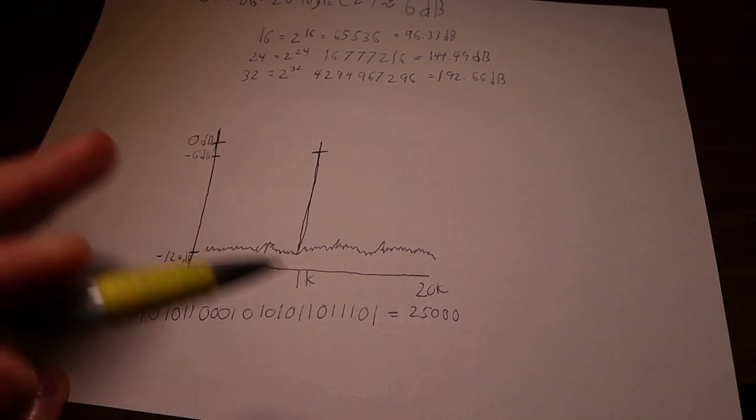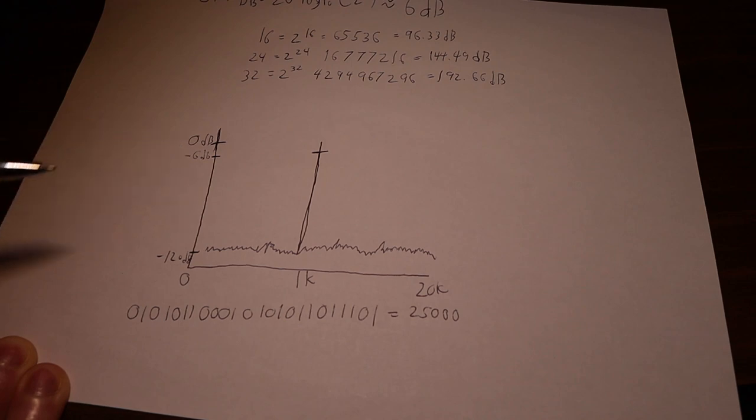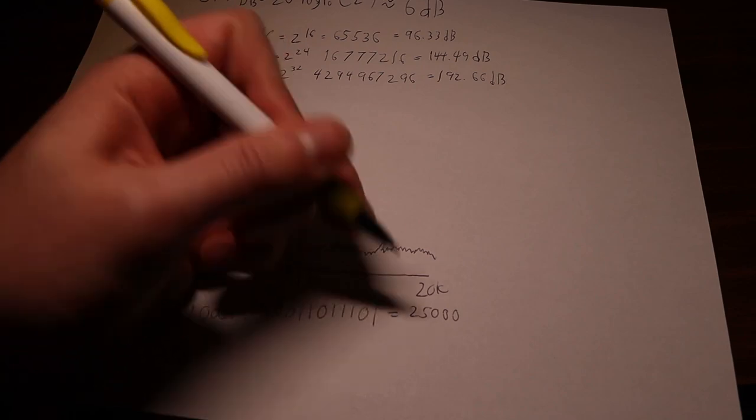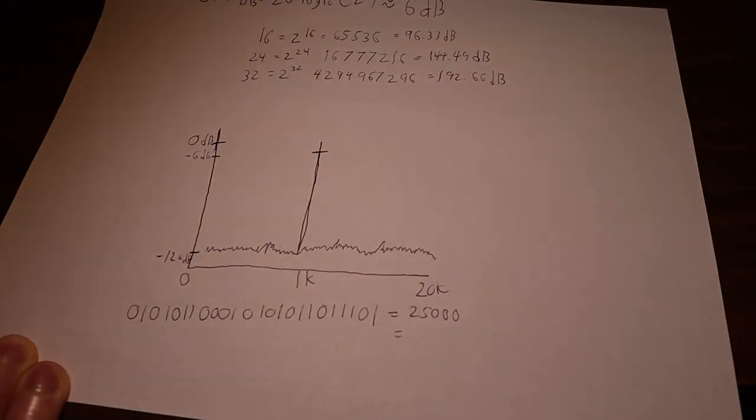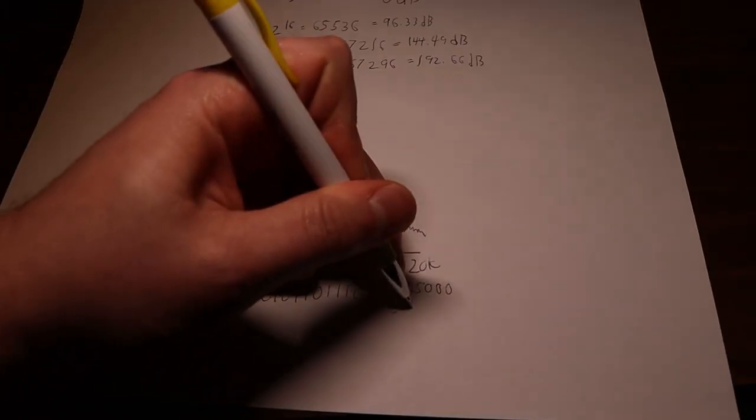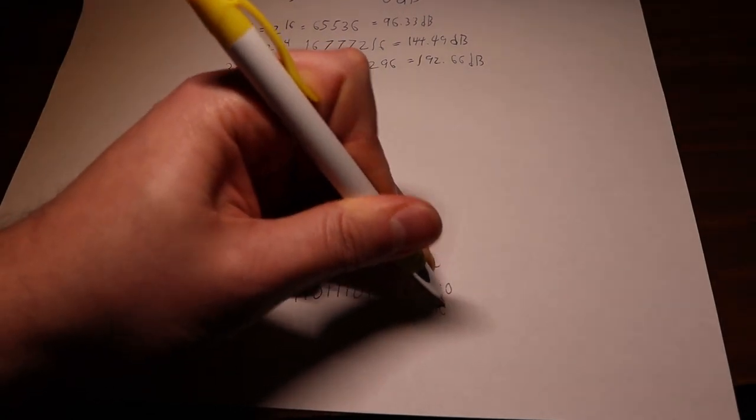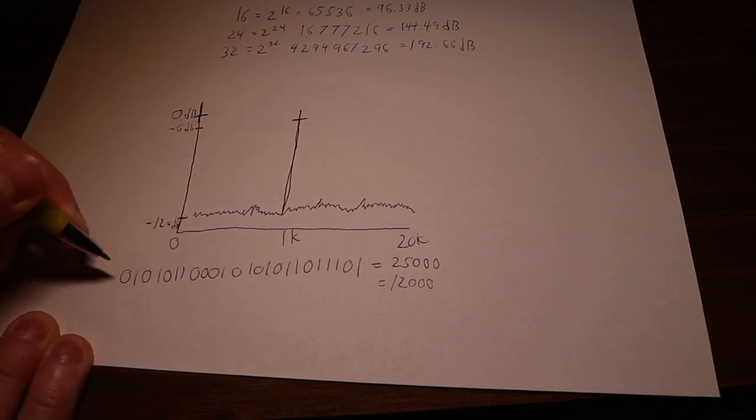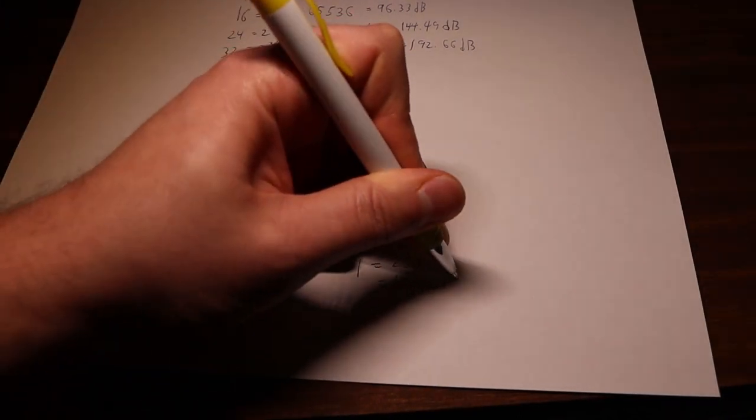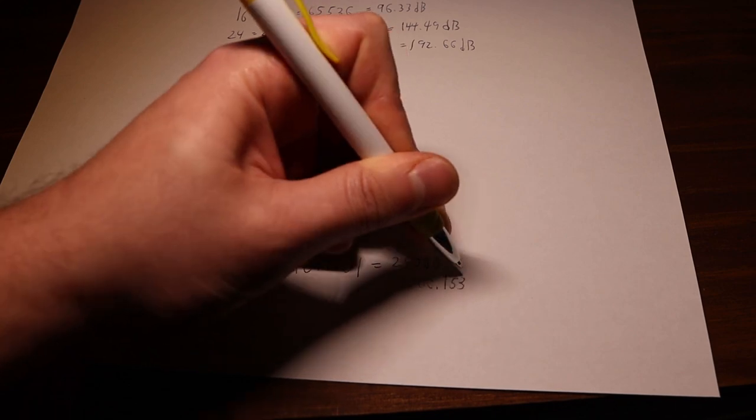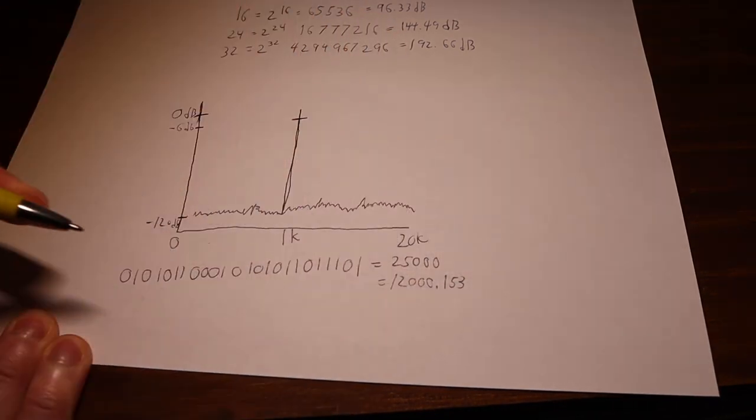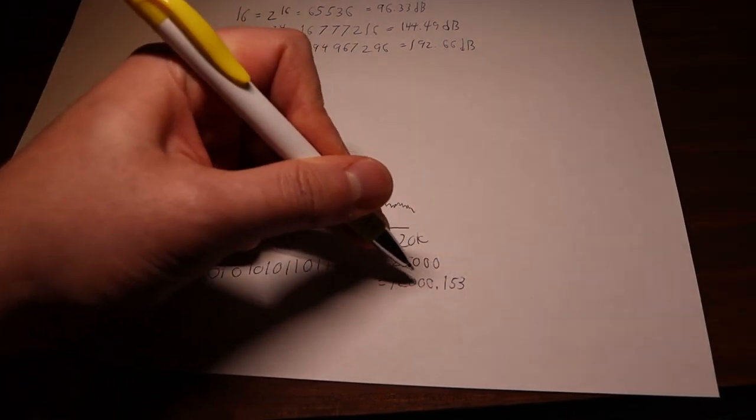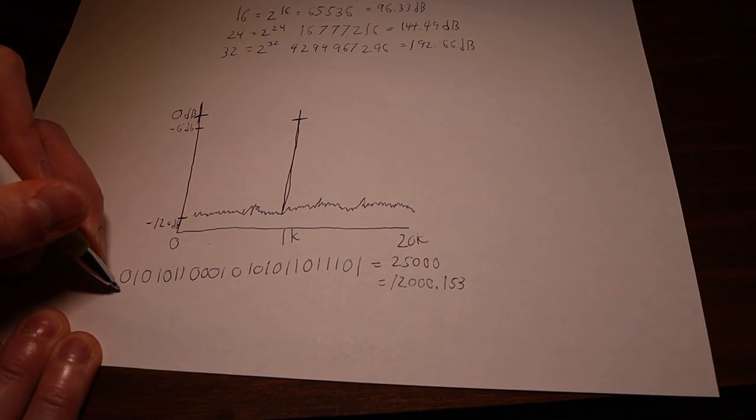So now we want to reduce the volume a certain amount. Let's say it's negative 6 dB here. So then all of a sudden, the digital calculation and the integer expression goes down to, we're just going to make up another number here, it's going to be 12,000. But now we don't, we are missing one bit. Actually, let's make it 12,000.153 because it's often not a perfect integer when you do this volume reduction. And this is the perfect number. This is the number that we want to get.